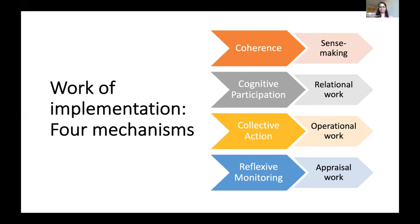These are the four key constructs of Normalisation Process Theory. First is coherence — how people make sense of the intervention, whether they understand how it differs from previous ways of working and understand its value. Once they have that sense of why they're being asked to deliver the intervention, they can start participating and engaging with each other, and relationships between different individuals in the health system may change. Then, thinking about how they operationalise the intervention involves dividing labour and resources and taking collective action. Finally, how they appraise and reflect upon the intervention, and based on that, decide whether to continuously engage with it or to leave it.